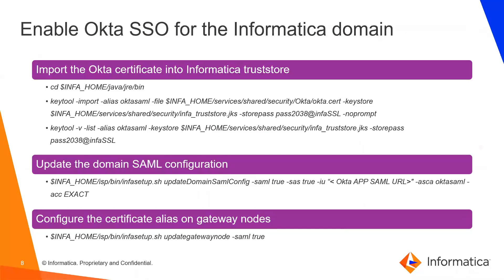The next step is to enable Okta SSO for the Informatica domain. To do so we need to import the downloaded Okta.cert file into the Informatica trust store. First, change the directory to the Java JRE bin directory where the keytool utility is present, then run the keytool import command. In the command, we pass the path of the Okta cert file we just downloaded, the path of the Informatica trust store file, the default Informatica trust store password, and an alias name for the trust store entry. Once we run this command, the certificate will be imported. To confirm, we can run a second keytool list command.